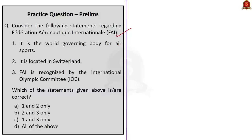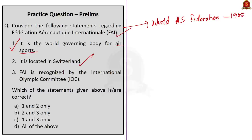The next question is about the Fédération Aéronautique Internationale (FAI). Statement 1: it is the world governing body for air sports — correct, also called the World Air Sports Federation, founded in 1905. Statement 2: it is located in Switzerland — correct. Statement 3: it is recognized by the International Olympic Committee — correct. Therefore, the correct answer is Option D: all of the above.